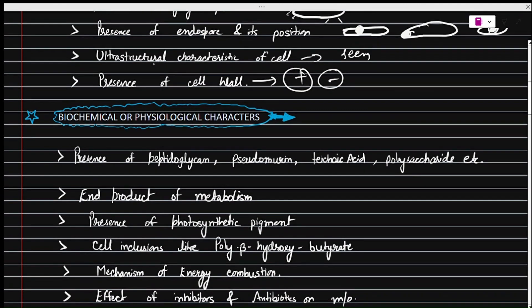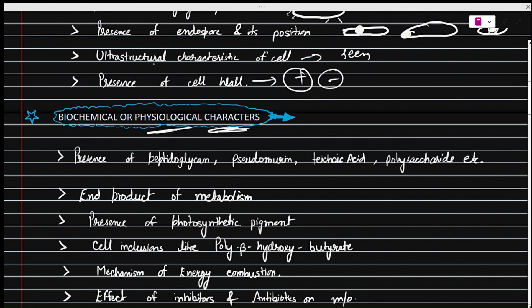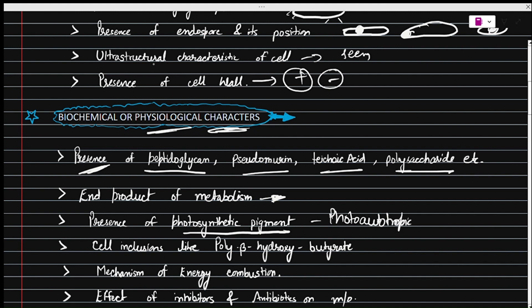The second criteria is biochemical and physiological characters. These are determined by examining the presence of peptidoglycan, pseudomurin, teichoic acid, and polysaccharides. The end products of metabolism are also observed. Additionally, the presence of photosynthetic pigments — like those found in photo-autotrophic bacteria — which help them in photosynthesis, are also observed.